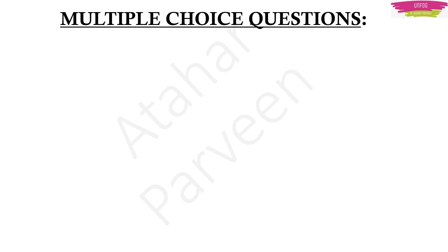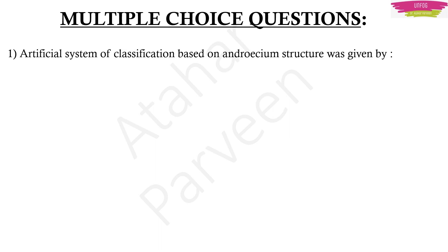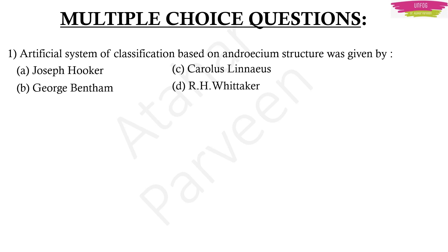Now let's solve some multiple choice questions. The first question: artificial system of classification based on androecium structure was given by — option A: Joseph Hooker, option B: George Bentham, option C: Carolus Linnaeus, option D: R.H. Whittaker. I suggest that when you look at a question, pause the video and try to answer it on your own. If you are not able to, then play the video, see the answer, and remember it. Please try to memorize these MCQs because they are important.